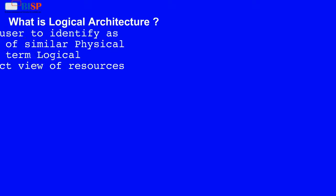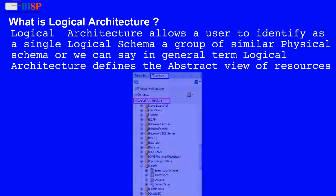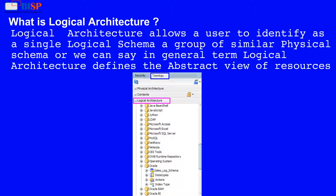What is logical architecture? Logical architecture allows a user to identify as a single logical schema a group of similar physical schemas. In general terms, logical architecture defines the abstract view of resources.